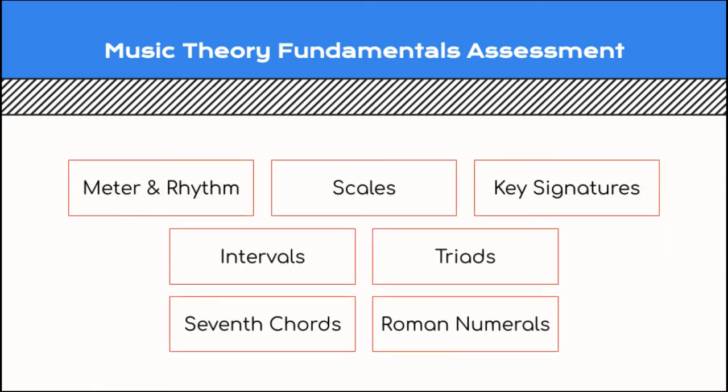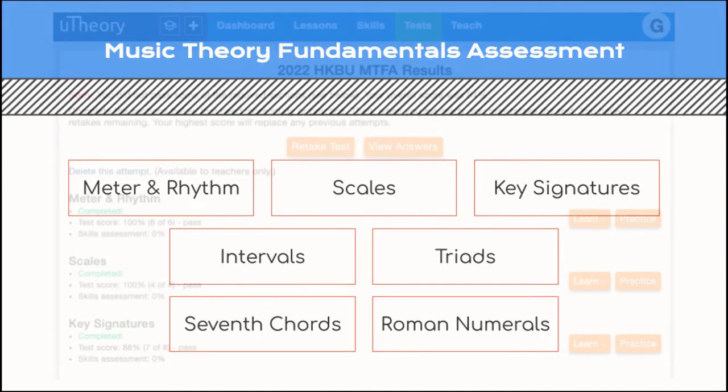There are 7 timed sections on the assessment, which covers meter and rhythm, scales, key signatures, intervals, triads, 7th chords, and Roman numerals. You will need to achieve a passing grade in each section in order to pass the entire assessment.